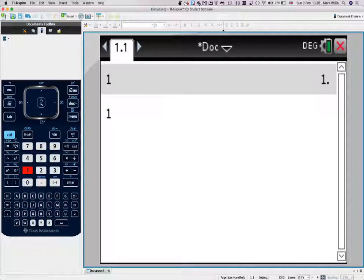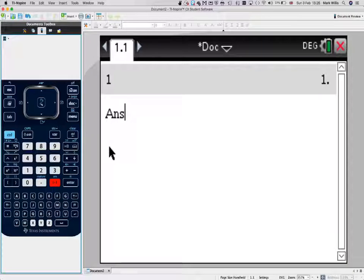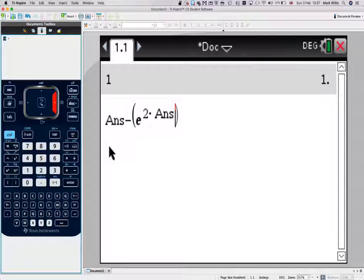So that's x0 minus, we have to introduce a bracket. So our function was e to the 2 times the answer, so the answer's standing for x here, minus 2 times the answer, minus 2 over...